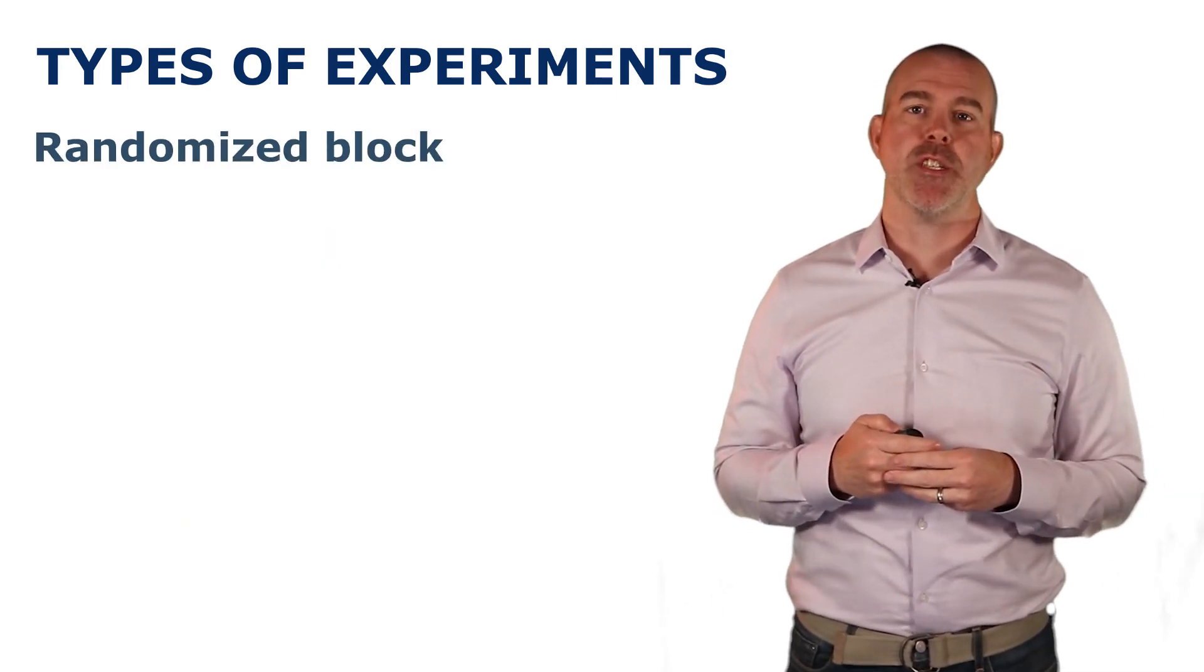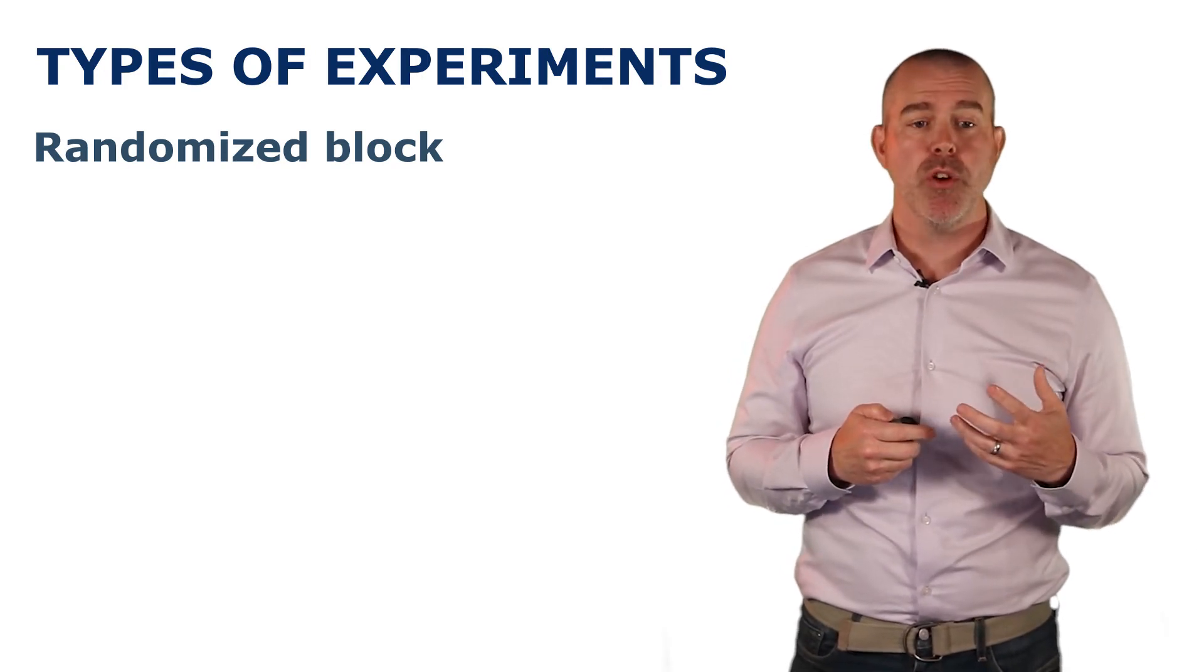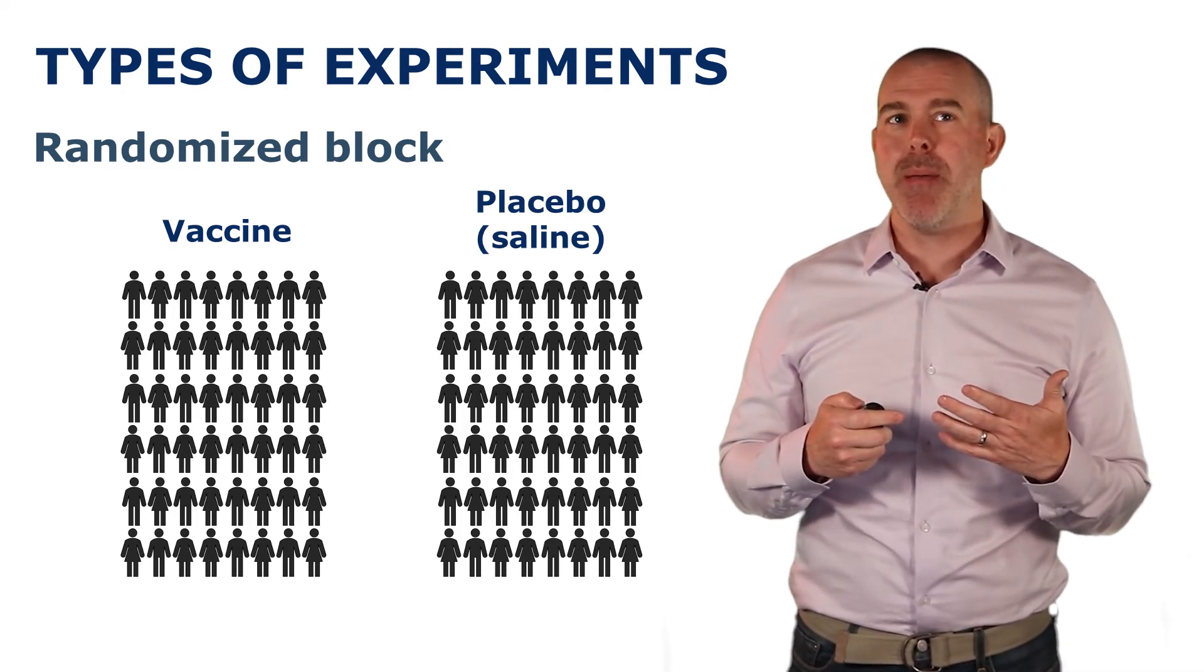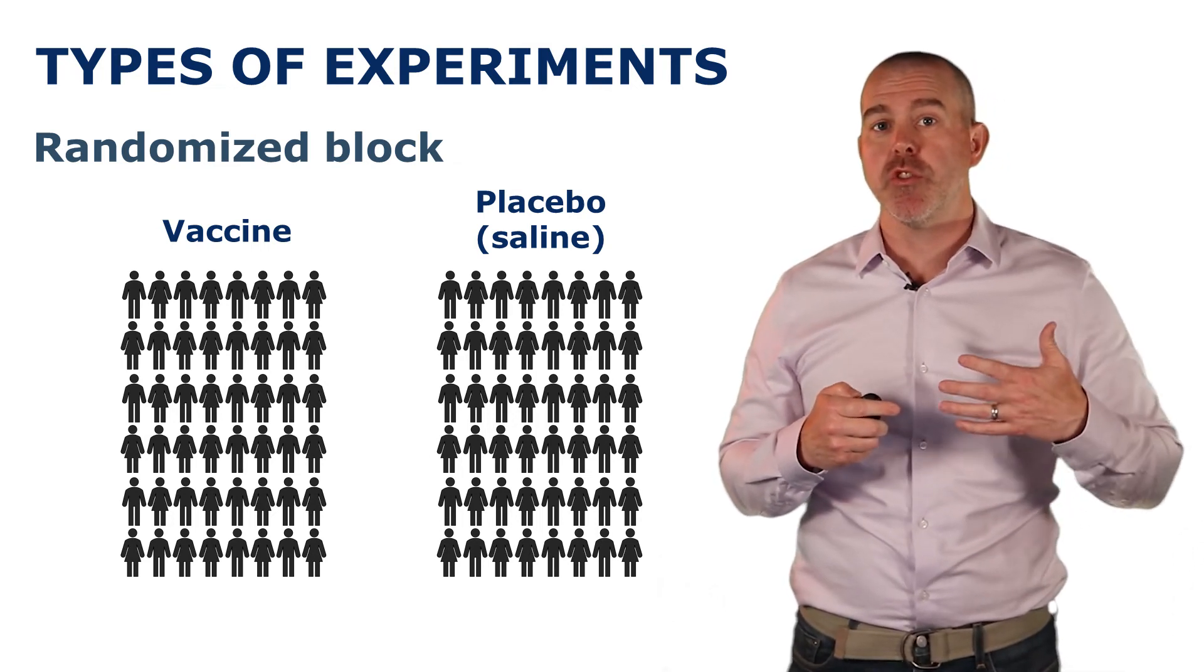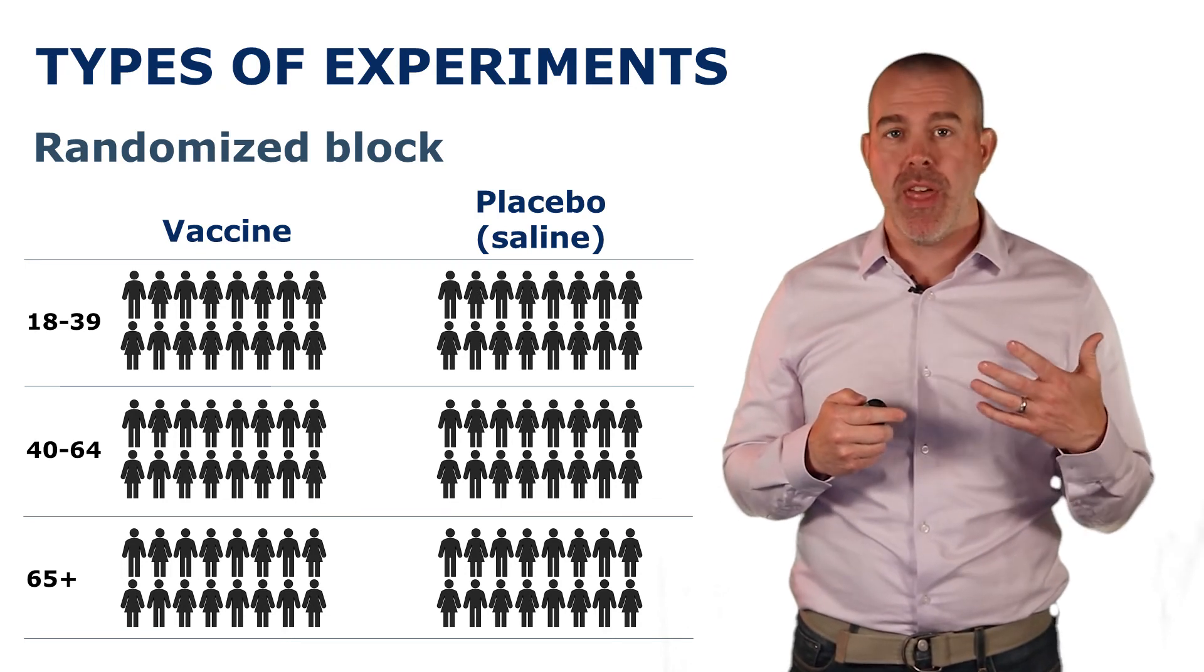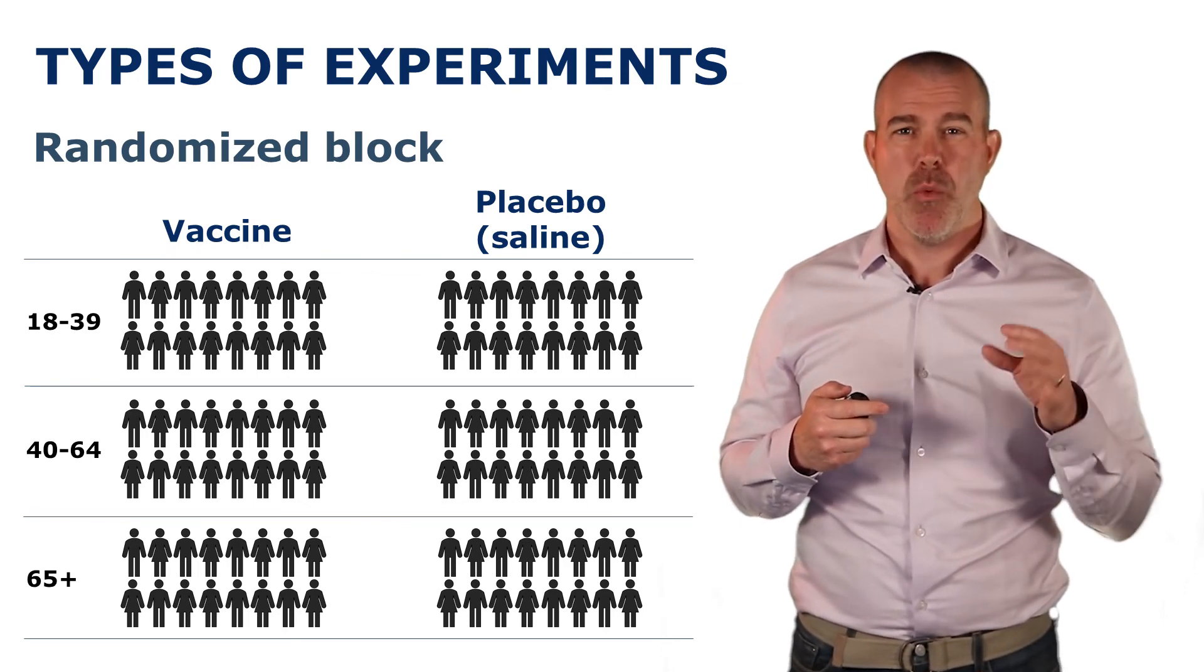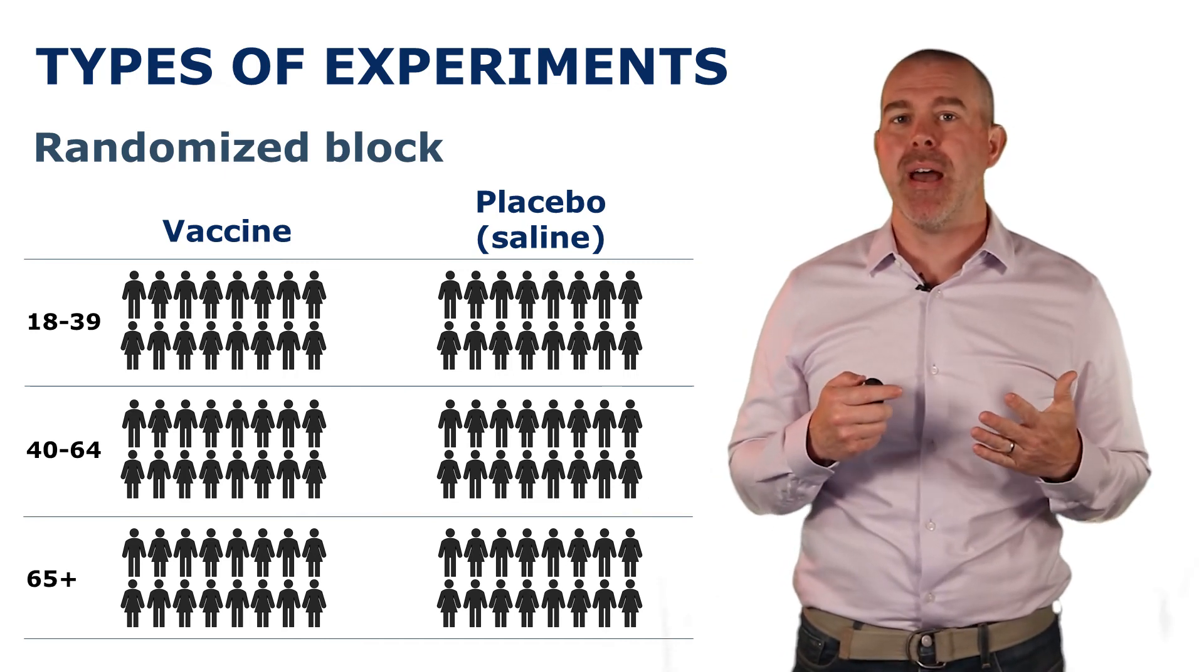And the third type of design experiment is called a randomized block. This is similar to the first type of study, like the vaccine study. Maybe we have half the people the vaccine, half the people placebo. But maybe we wonder if results might be different by age. So what we would do is split up the population based on different age groups and then see if the results differ. This might sound familiar.